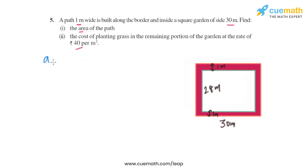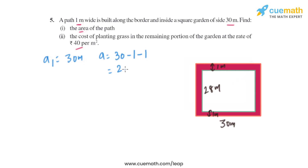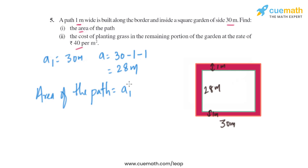The side of the bigger square, let's call it a₁, is given as 30 meters. Now, the side of the smaller square, a, is 30 minus 1 minus 1 — subtracting 1 meter from the top and 1 meter from the bottom — which gives us 28 meters.